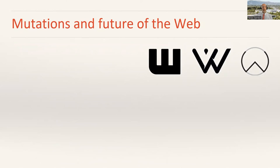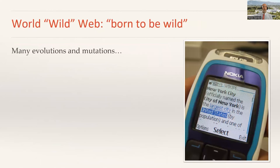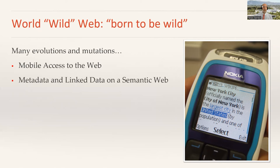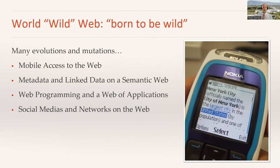As soon as the web was born, it started to have a number of mutations. The web was born to be wide — as soon as it started to be used, it evolved in many different directions. These mutations include the advent of mobile access to the web, the development of metadata and linked data on a semantic web, the development of a web for machines, the boom of web applications and web programming, the development of social media and social networks on the web, and more recent mutations such as the web of things. More detail on each of these is provided in the article.